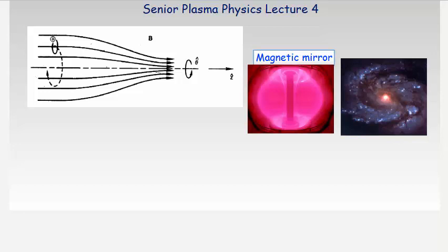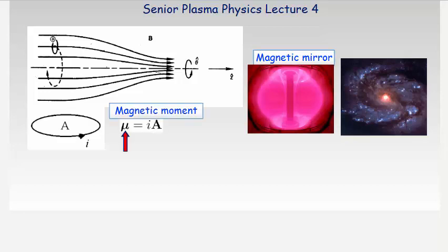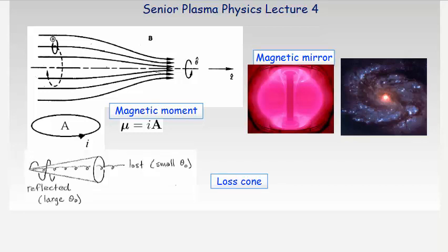In deriving the equations for the magnetic mirror, we will introduce the magnetic moment for a charged particle undergoing circular motion. Finally, we will derive the condition required for a particle to be transmitted through the mirror. This condition is called the loss cone.